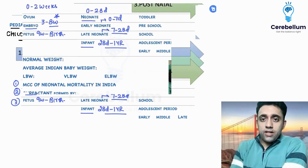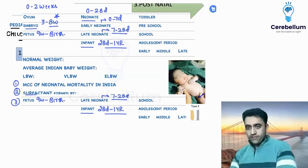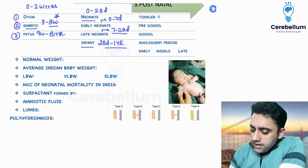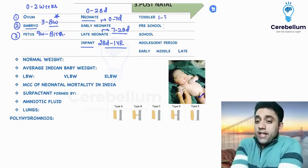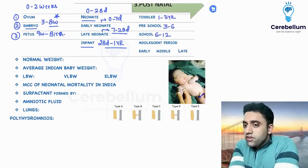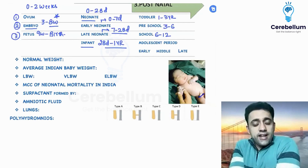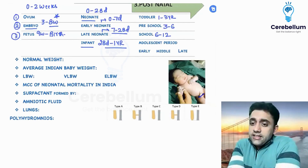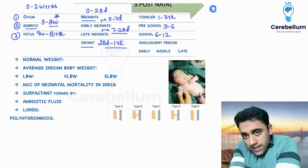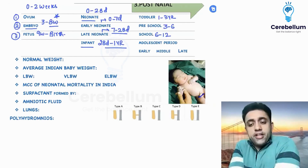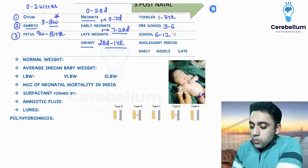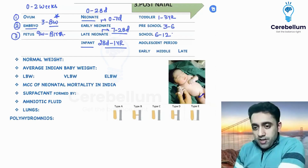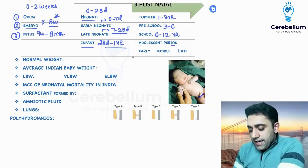What is a toddler, what is preschool, and what is school-going? One to three years of life is a toddler. Three to six years of life is the preschool period. And six to twelve years of life is the school-going period.